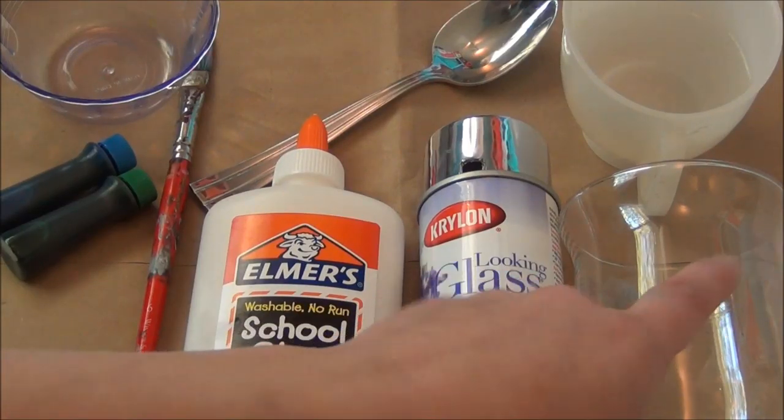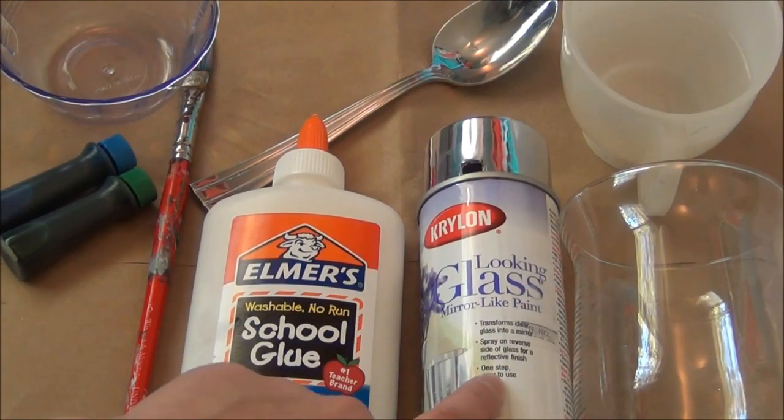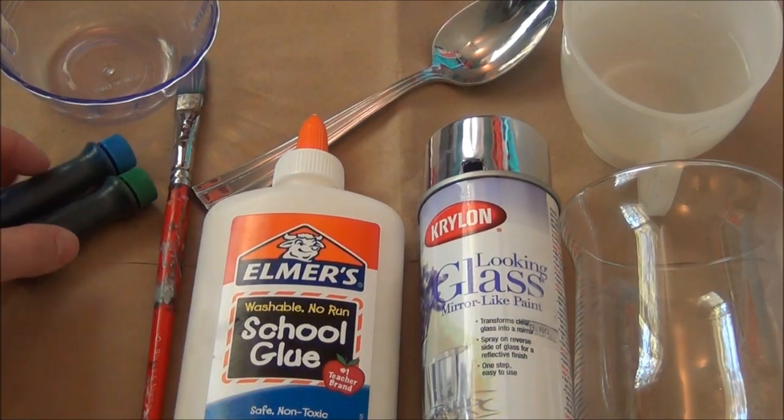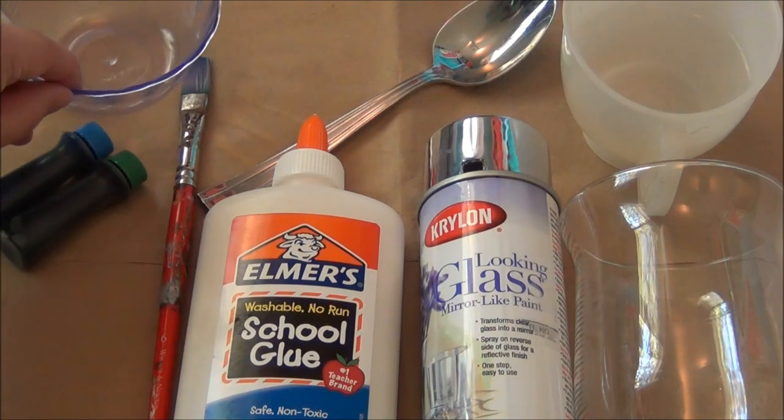But I really like the way they turned out and I collect a lot of sea glass, so they look really good together. I hope you enjoy it. For this you're going to need your glass container, Krylon looking glass mirror-like spray paint, white glue, a paintbrush you don't care about, food coloring, a container to mix in with a little bit of water in it, and a spoon.